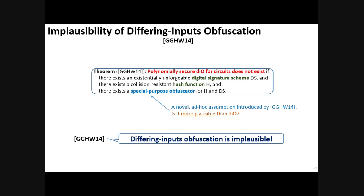This special purpose obfuscator is a novel hardness assumption that was introduced by Garg et al. The question is, is it more plausible than DIO? And yes, it indeed looks more plausible, and so the conclusion was that differing input obfuscation is implausible.